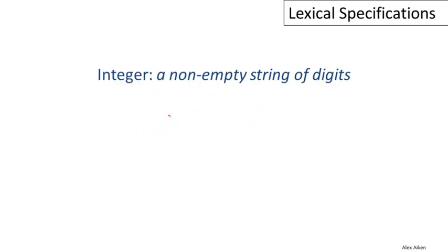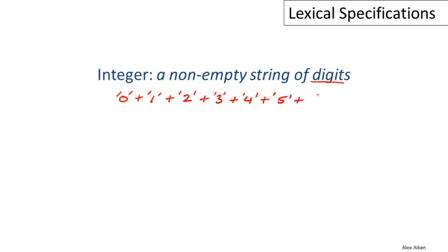Now let's consider a slightly more complicated example. Let's think about how to specify the integers, which we want to be the non-empty strings of digits. The first problem here is to write out what a digit is. A digit is just any of the individual characters 0 through 9, and we already know how to write out single character regular expressions. It's just a union of 10 of those to specify this. So that's a regular expression for the set of strings corresponding to all the single digits.